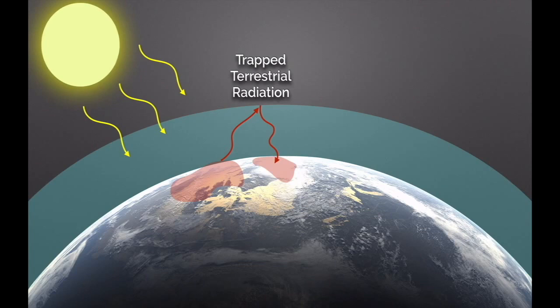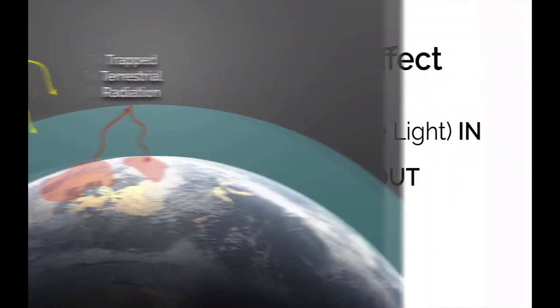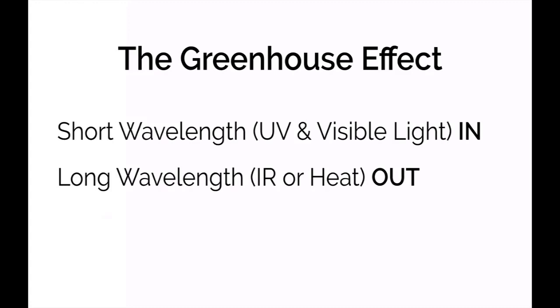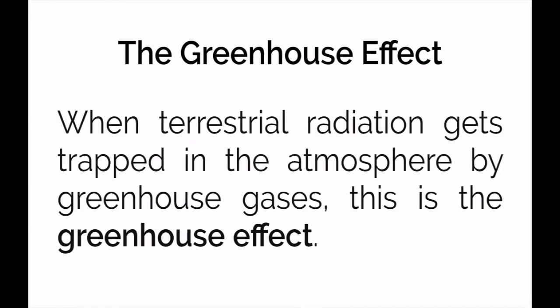So just to review, the greenhouse effect involves an energy transformation where shortwave EMS energy in the form of UV light and visible light come in, but longwave radiation, which is infrared or heat, come out or are radiated by the Earth's surface. And the greenhouse effect specifically is when terrestrial radiation gets trapped in the atmosphere by greenhouse gases.